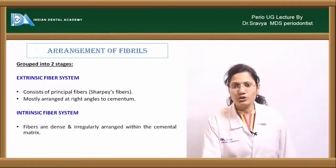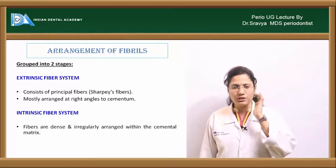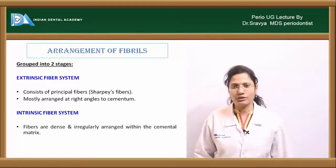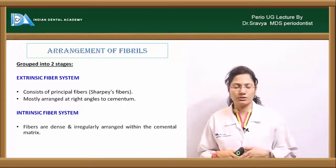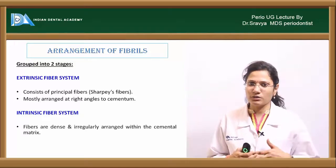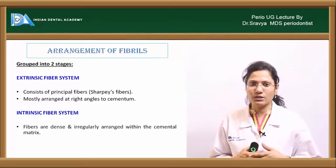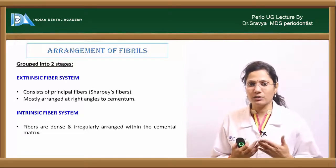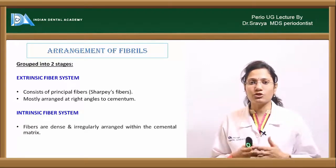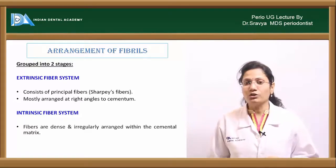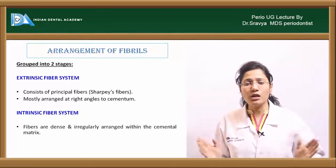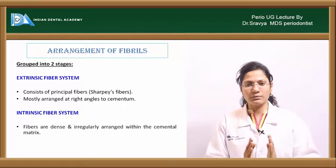Collagen fibrils are arranged in two patterns: extrinsic and intrinsic fibers. The extrinsic fibers of cementum are the terminal edges of Sharpey's fibers — the terminal portions of periodontal ligament fibers. In the diagram, fibers labeled E are extrinsic fibers arranged perpendicularly, while intrinsic fibers are arranged in an irregular but denser pattern.